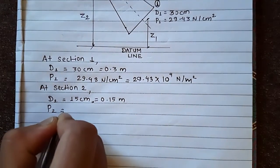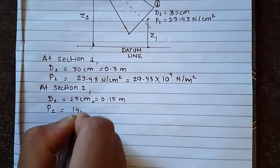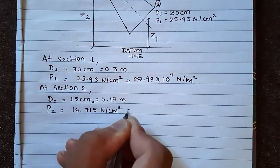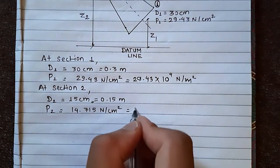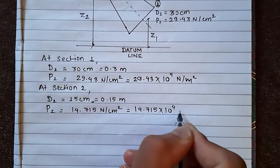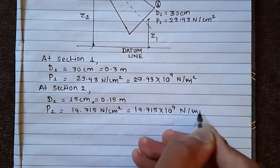P₂ is 14.715 Newton per cm². This is P₂, 14.715 into 10 to the power of 4 Newton per meter square.